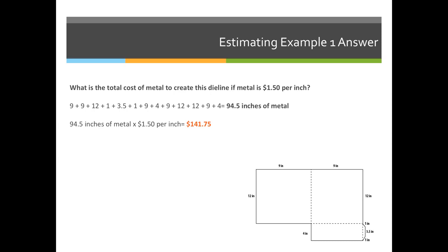We could then figure out how much it will cost to make the die if a die cutter tells us that metal is priced at $1.50 an inch. So 94.5 times $1.50 per inch means the total cost for this die would be $141.75.